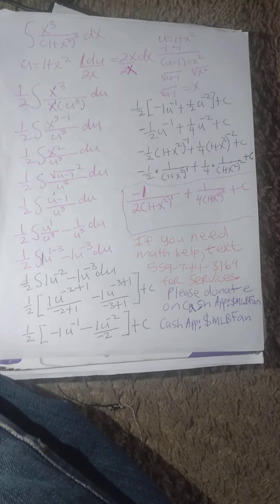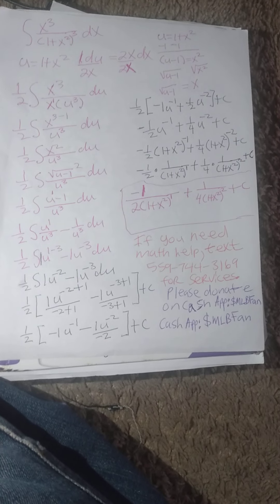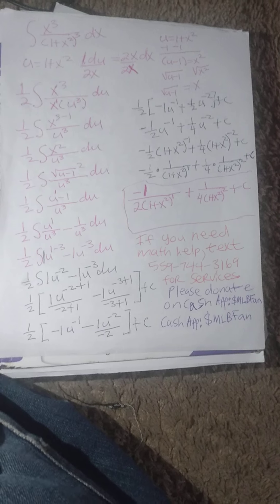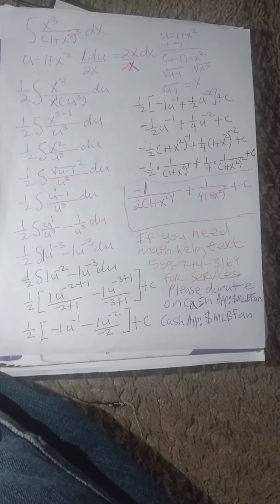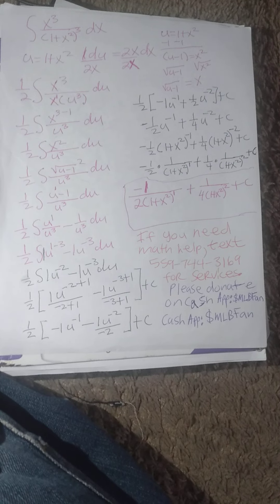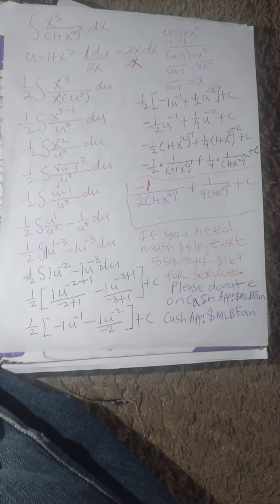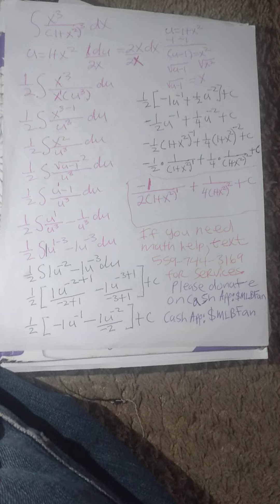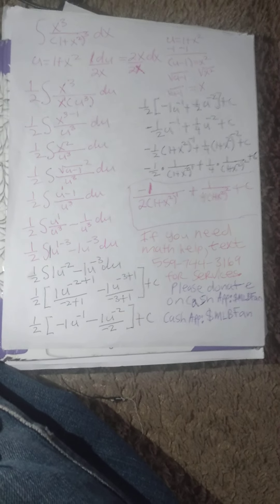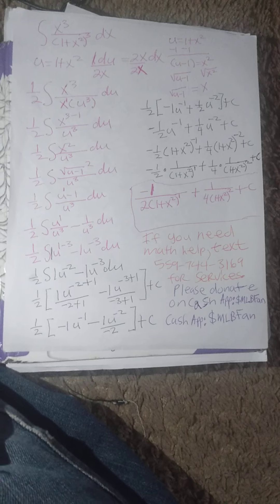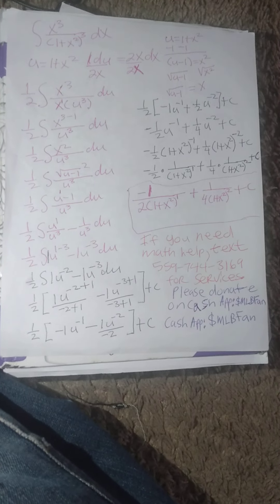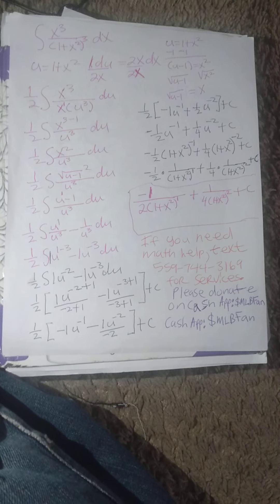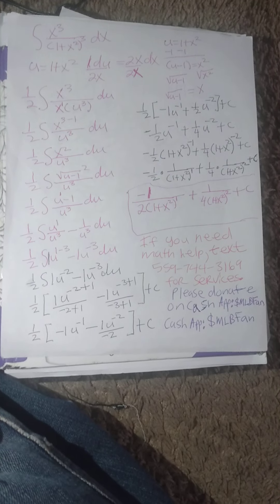Now, that is going to simplify to 1 half times the integral of u minus 1 divided by u to the third power. Notice that I put a power of 1 above the numerator because eventually we will be doing quotient rule after dealing with monomial calculation. Monomial means one term, and that appears in the denominator.